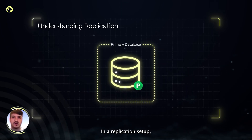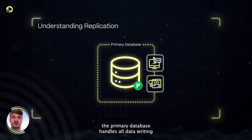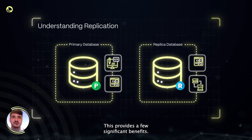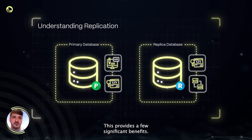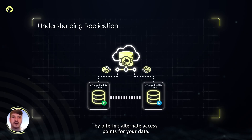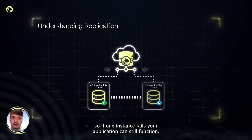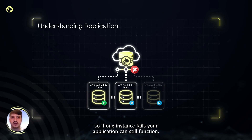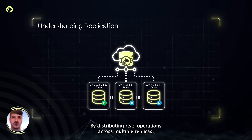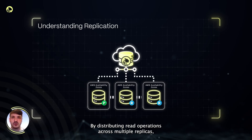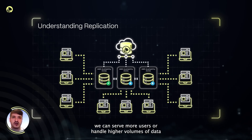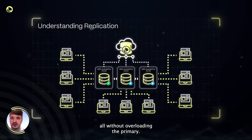In a replication setup, the primary database handles all data writing, but replicas are primarily used for read operations. This provides a few significant benefits. First, it increases fault tolerance by offering alternate access points for your data, so if one instance fails, your application can still function. Replication also improves scalability. By distributing read operations across multiple replicas, we can serve more users or handle higher volumes of data, all without overloading the primary.